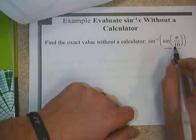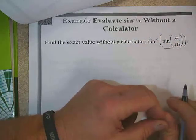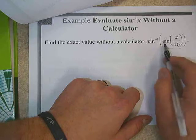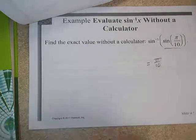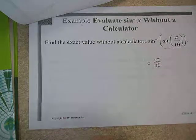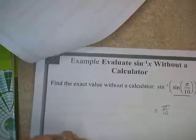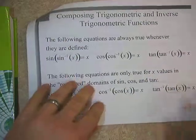Let's look at the next problem: sine inverse of the sine of pi over 10. We want to work from the inside out. The sine of pi over 10 is not a nice answer, and it says without a calculator — pi over 10 is not one of our nice angles. So we recognize that sine inverse and sine undo each other. As long as the argument is between negative pi over 2 and pi over 2 — and pi over 10 is in that range — the answer is simply pi over 10.